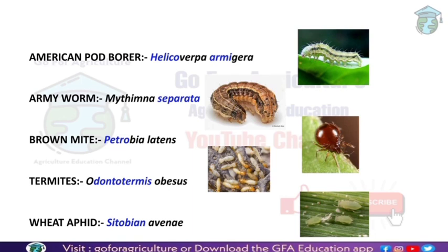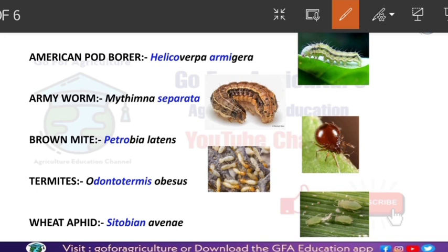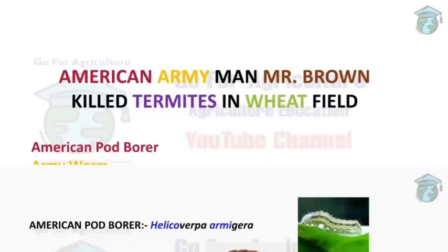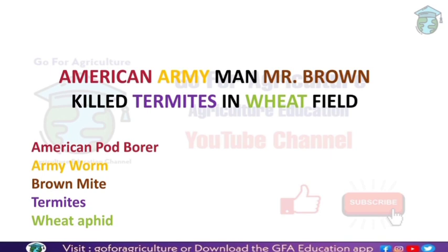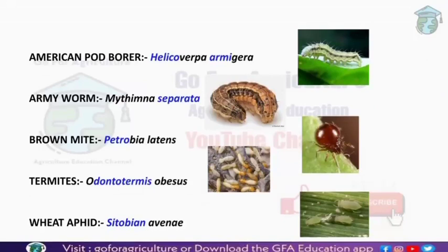You can also see a picture of the American Pod Borer. According to our sentence, 'American army man Mr. Brown killed termites in wheat field' - army is mentioned because the wheat field area is very large, so it requires an army to kill the termites. The army members, the soldiers, have to separate into different troops and go kill the termites.